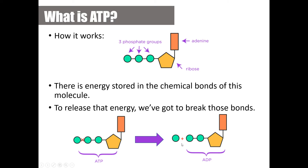When bonds are broken, it generates a lot of energy — you may have discussed this in physical science. With adenosine triphosphate becoming adenosine diphosphate, those bonds are broken through hydrolysis and we get lots of energy released in the process.